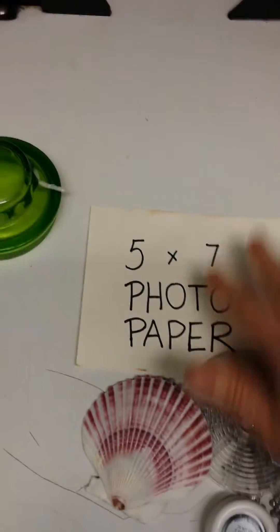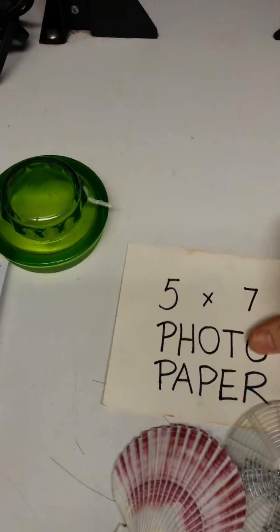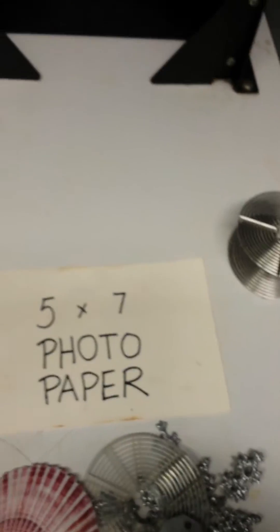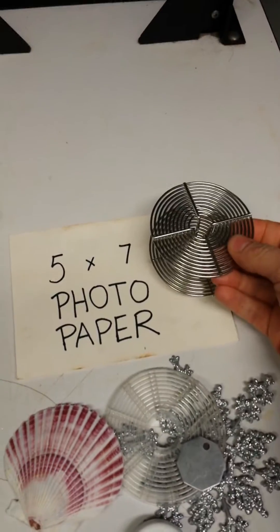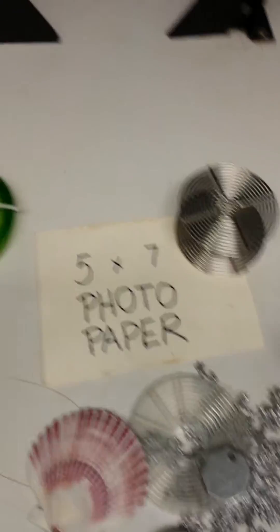I'm going to pretend for a second that the lights are off. And I've got a piece of 5x7 photo paper, which of course is glossy side up. And I'm going to go ahead and start adding objects. Now, this is the part, it's called a basic photogram.